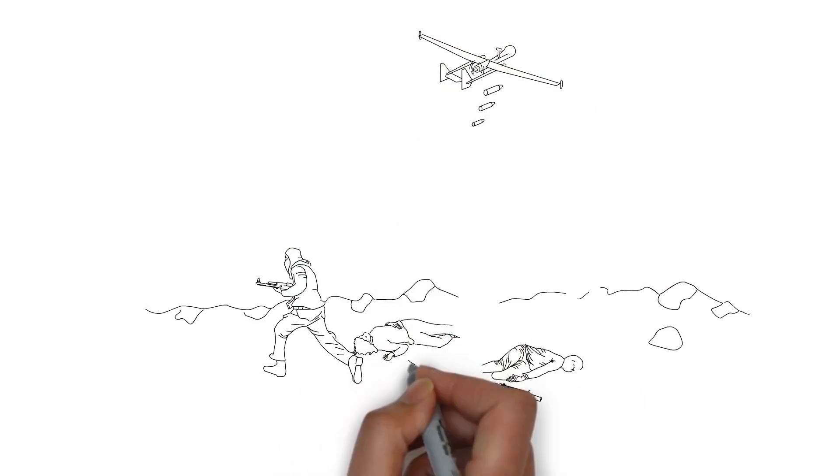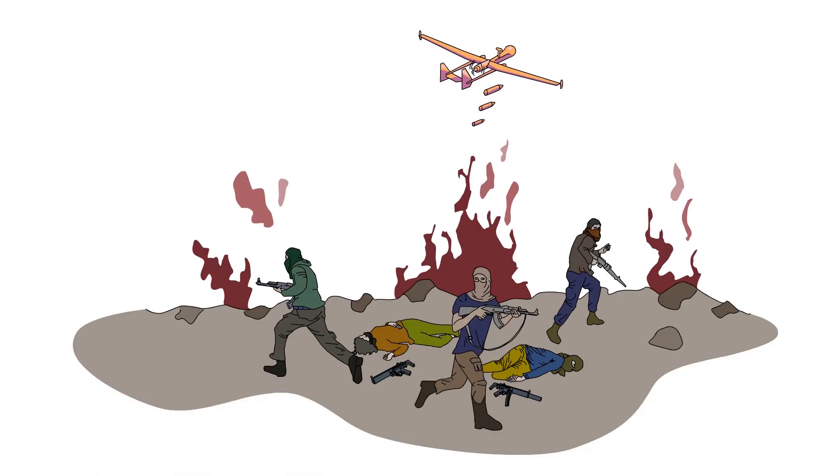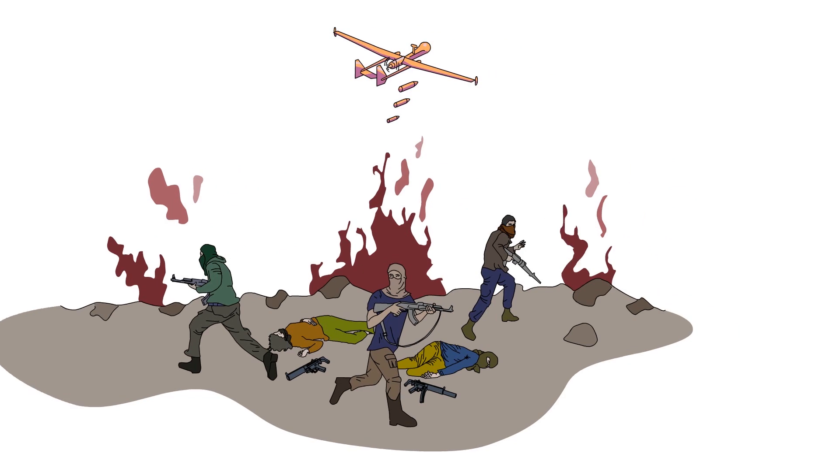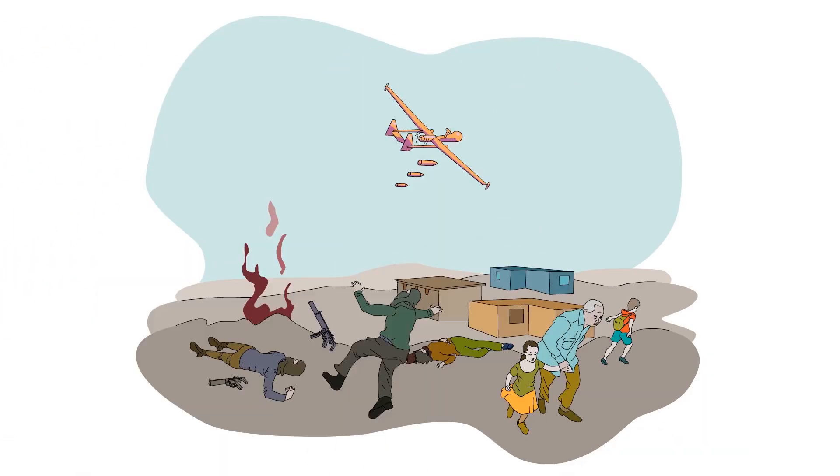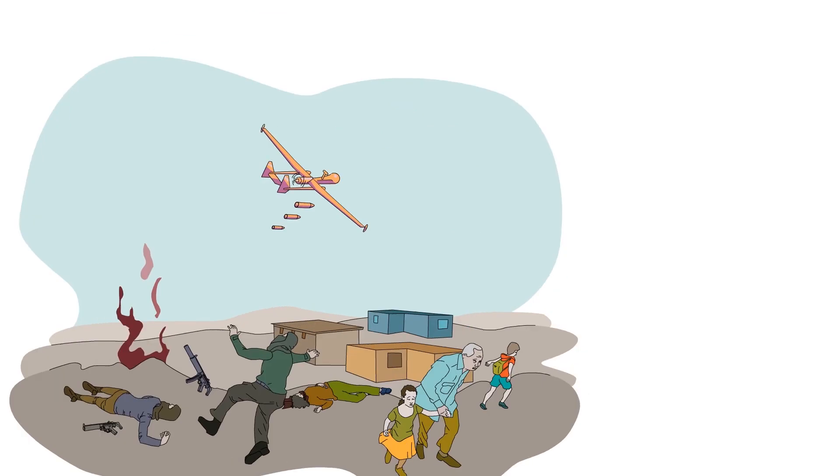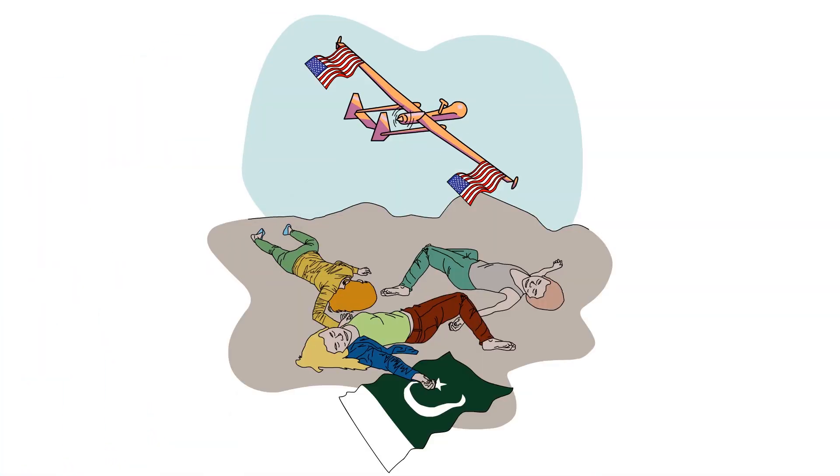On one hand, drone strikes may weaken terrorist organizations by killing key terrorist leaders and destroying their communication networks. On the other hand, drone strikes may cause blowback from the local population, perhaps because of the collateral damage they cause or the violation of state sovereignty. So the local people may actually turn against the U.S. and even side with the terrorists.